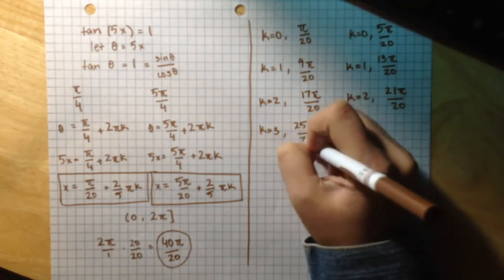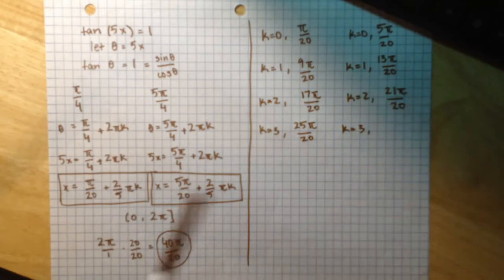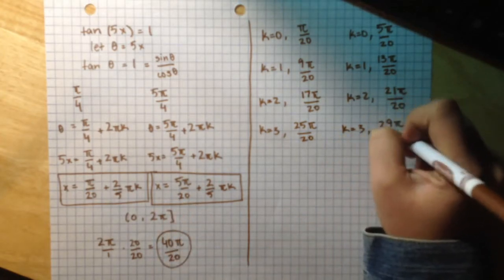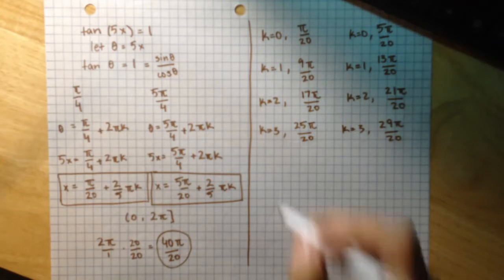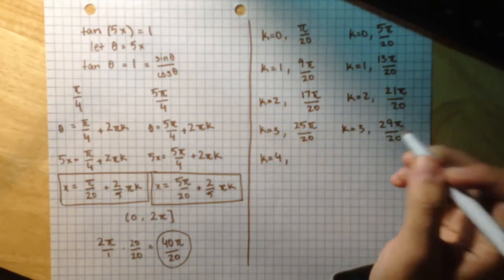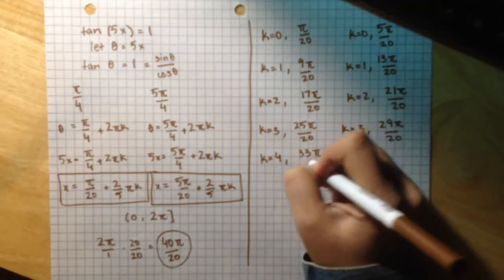We are getting closer and closer to 40pi over 20, but not quite there yet. If k equals 4 in this equation, then we get 29pi over 20. And if k equals 4 in this equation, then we get 37pi over 20.